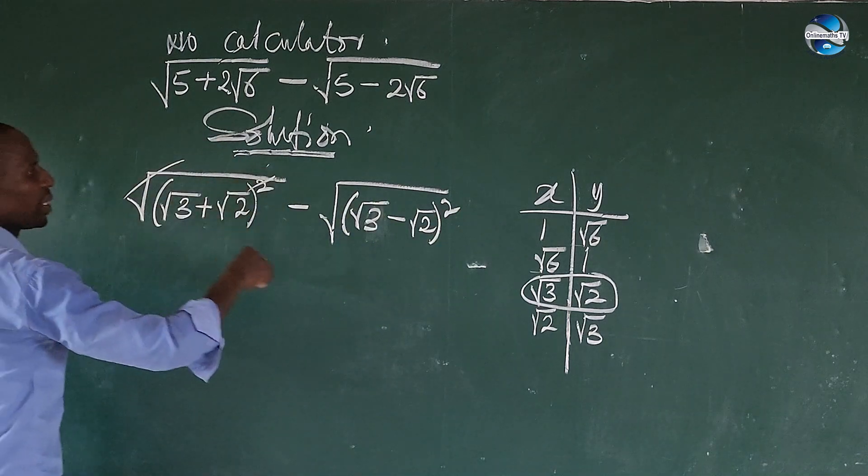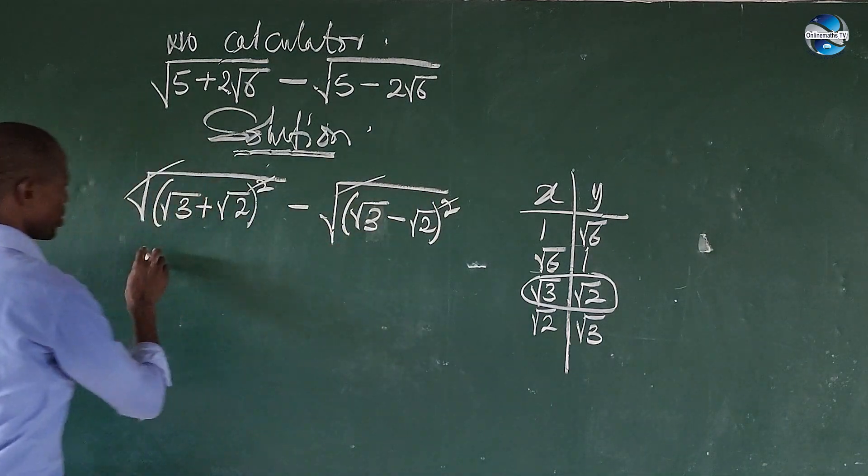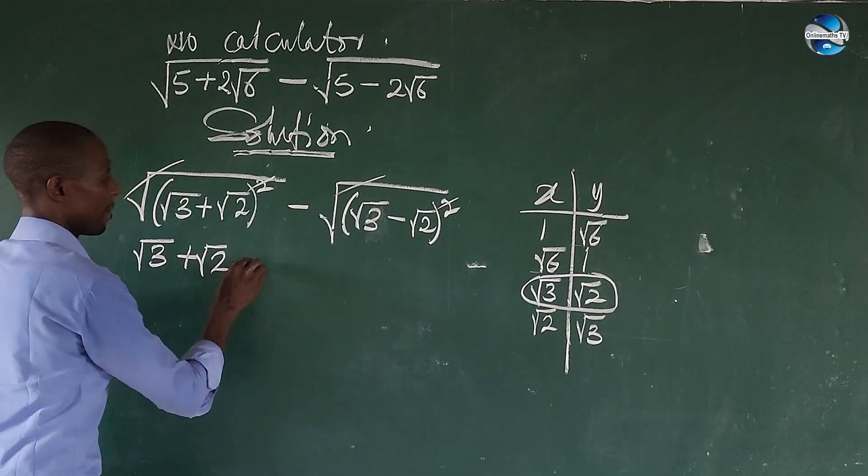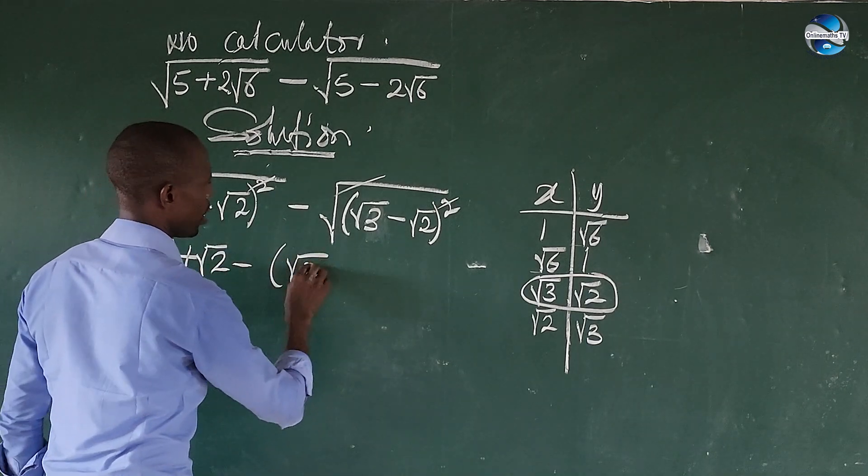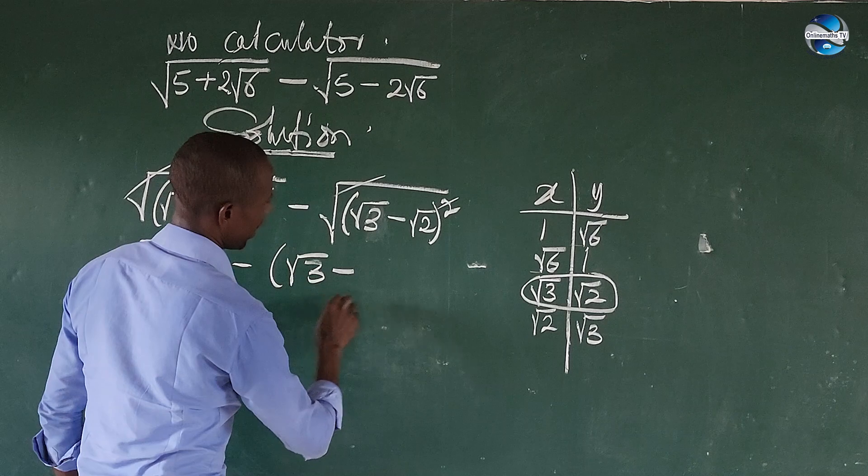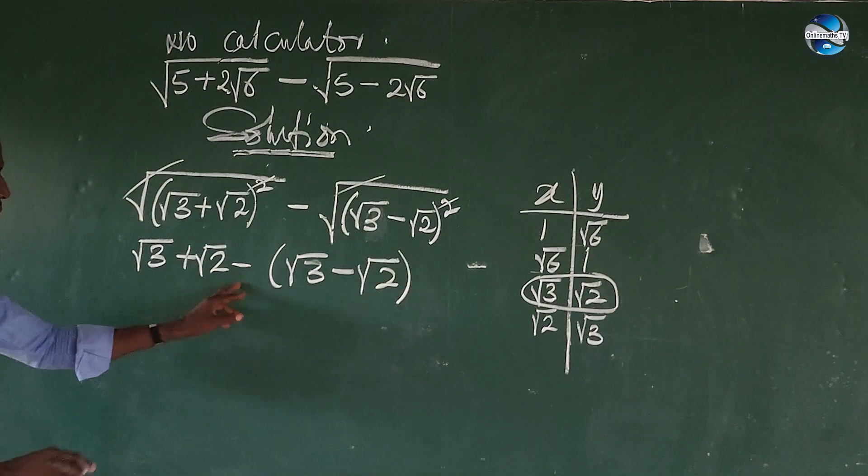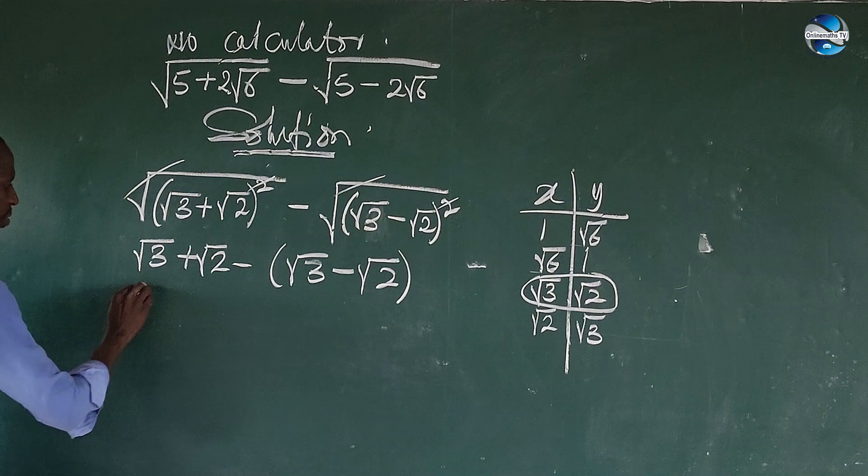So now we have a square root here, we have a square root here, where we have a square. So this can go with this, this goes with this. So we are now left with the square root of 3 plus the square root of 2 minus bracket the square root of 3 then minus the square root of 2. So we can use this to open up this.